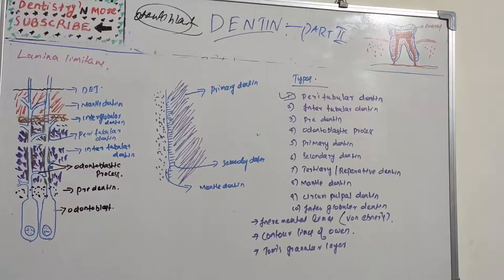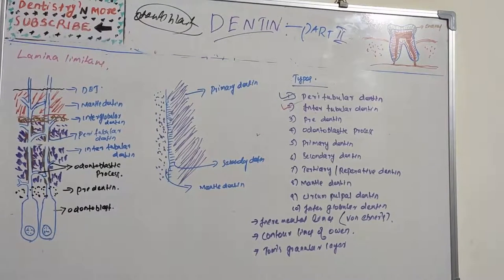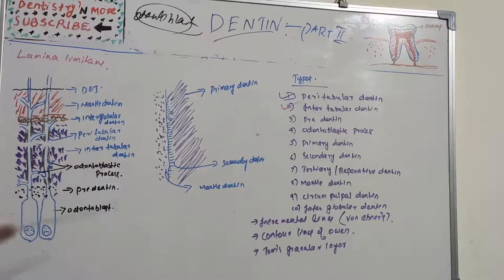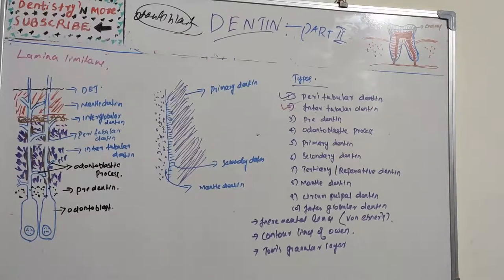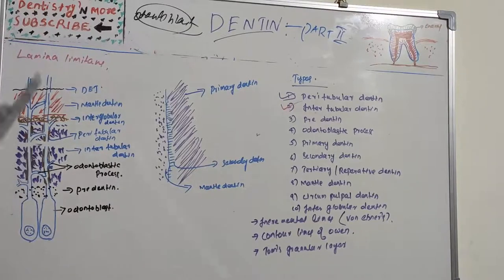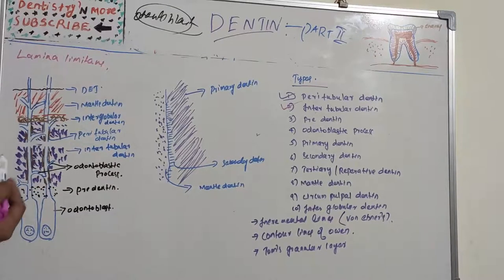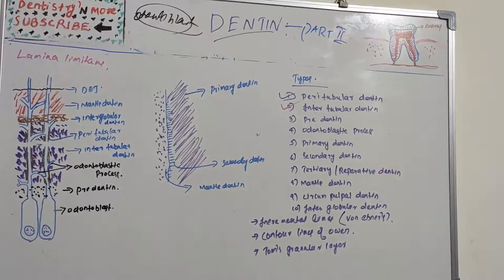Intertubular dentine is located between the dentinal tubules. It is less mineralized than the peritubular dentine which immediately surrounds the tubules. One half of its volume is organic matrix, especially collagen fibers. It is seen between the zones of peritubular dentine — between the peritubular dentine on either side of the odontoblastic processes.